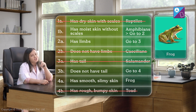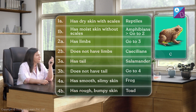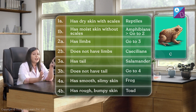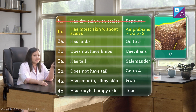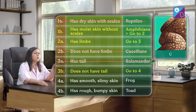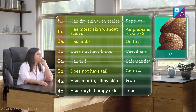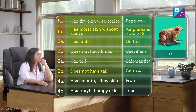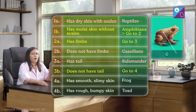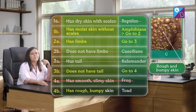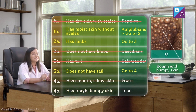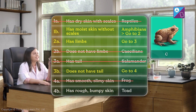We are left with just one. Specimen C looks a lot like a frog — it has moist skin, limbs and no tail. But unlike the frog, it has rough and bumpy skin. So, according to the key, specimen C is a toad.